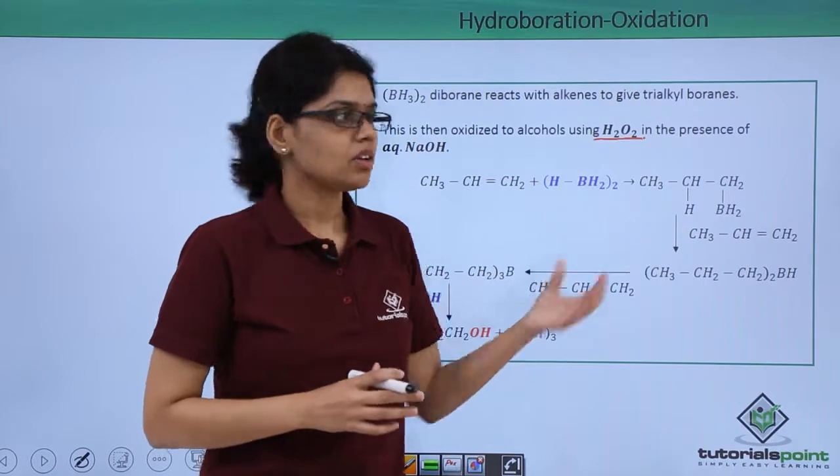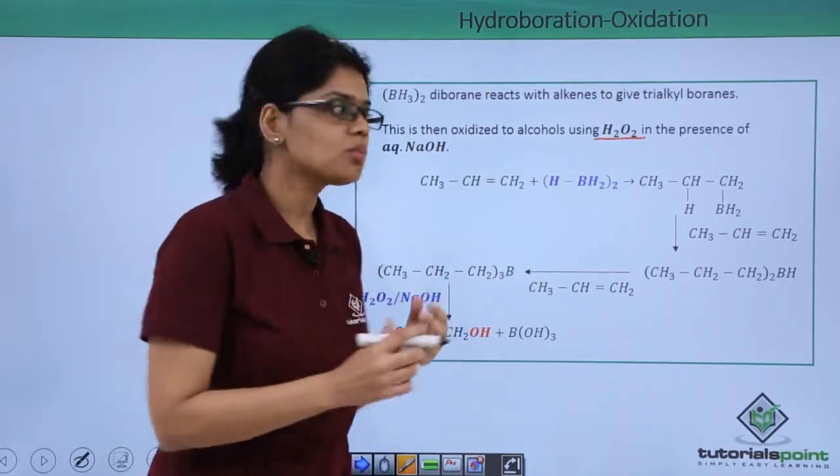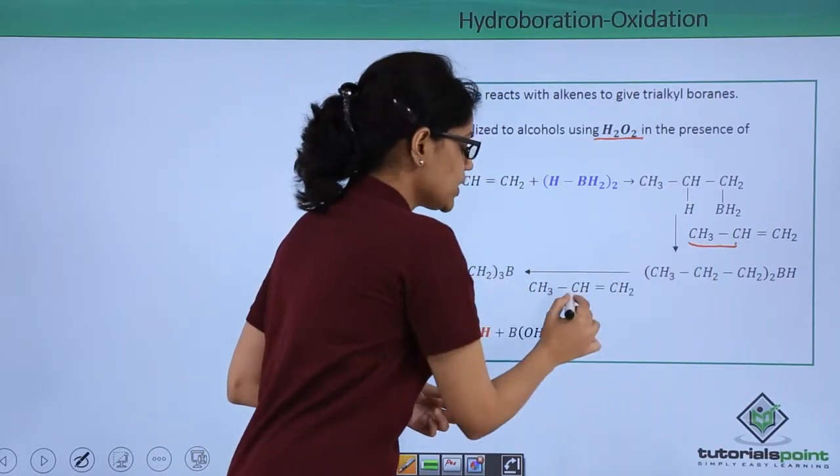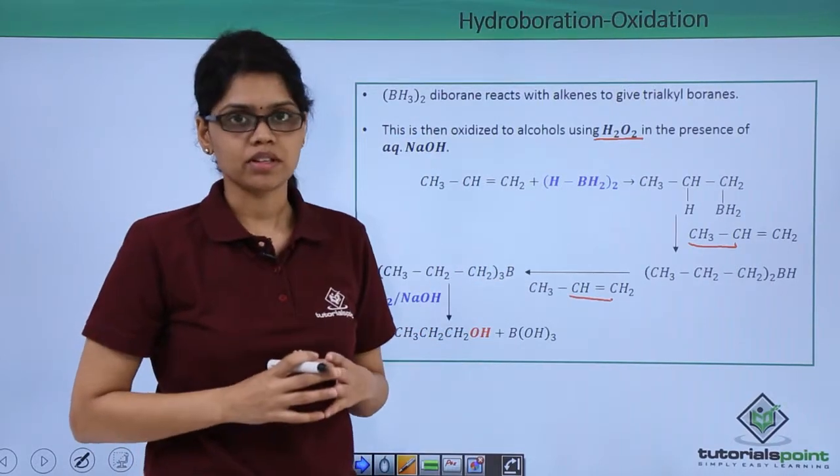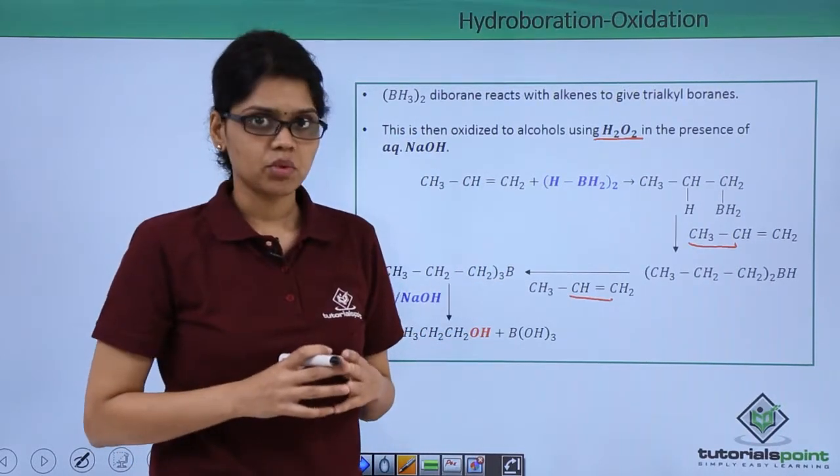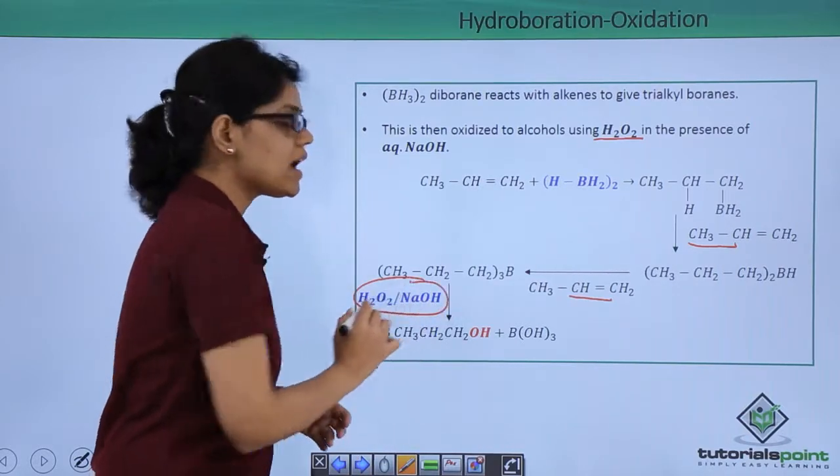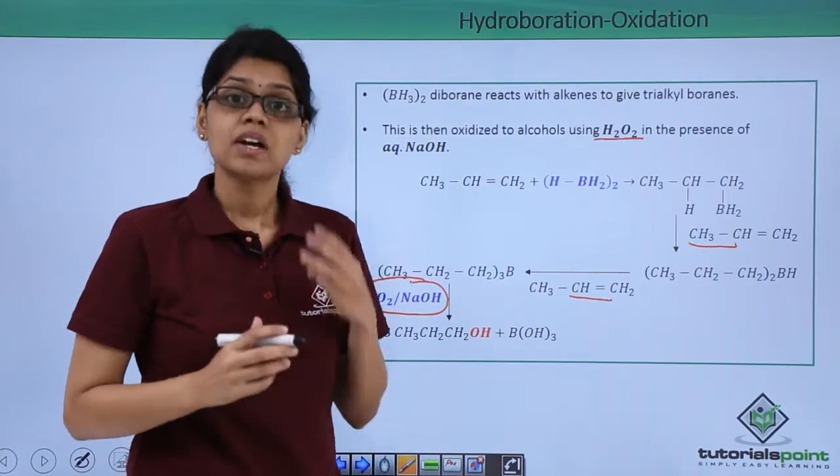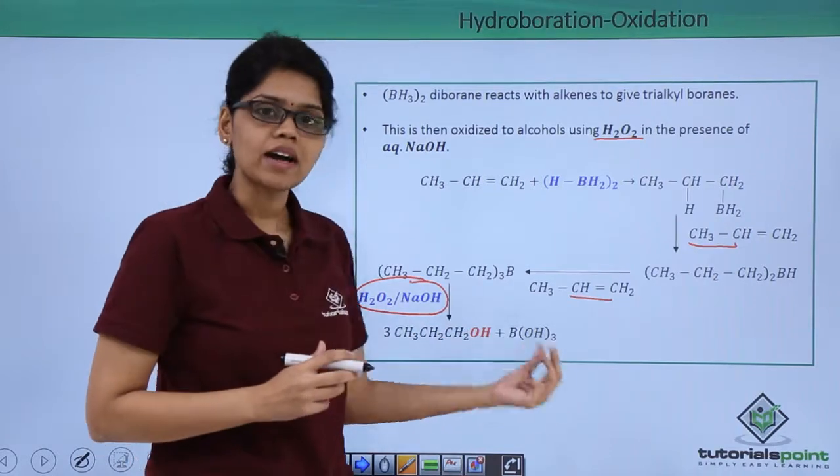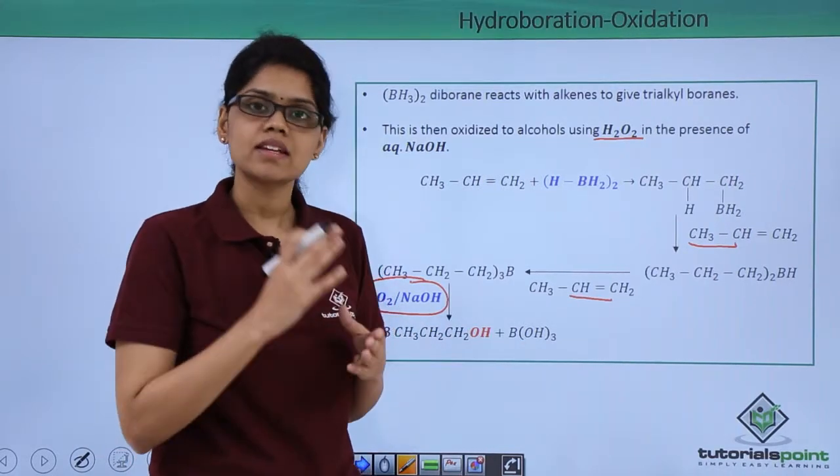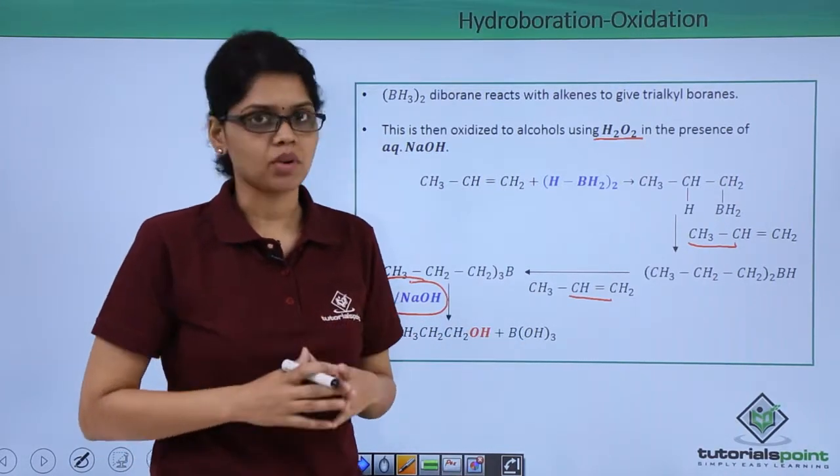Now, this particular compound further reacts with two molecules of propene to give trialkyl borane as the final product. This trialkyl borane further gets oxidized in the presence of H2O2 and NaOH to give three molecules of alcohol and orthoboric acid which is H3BO3 as the final product.